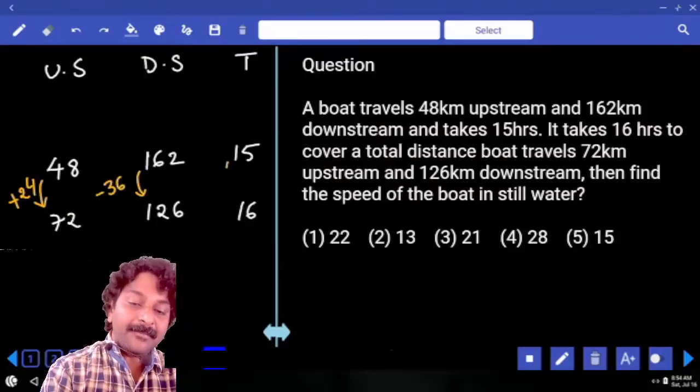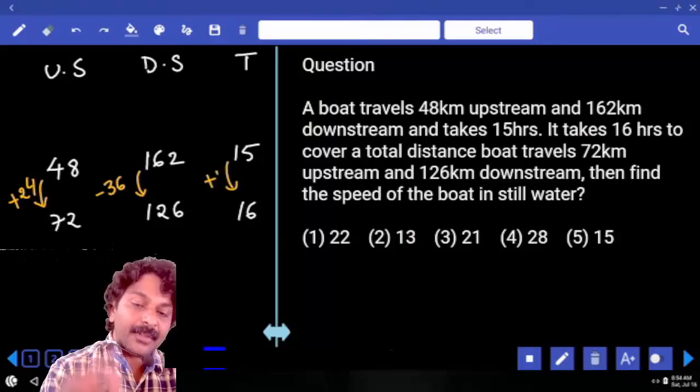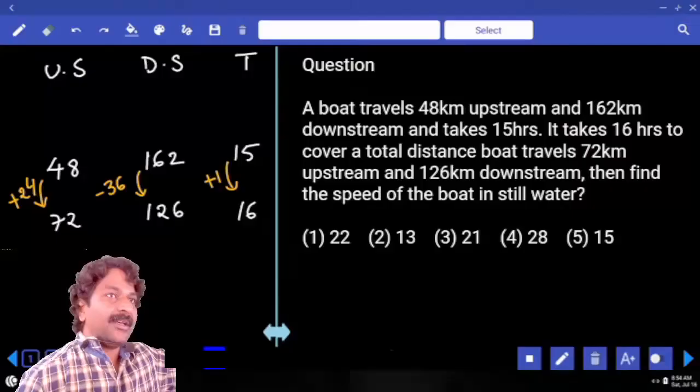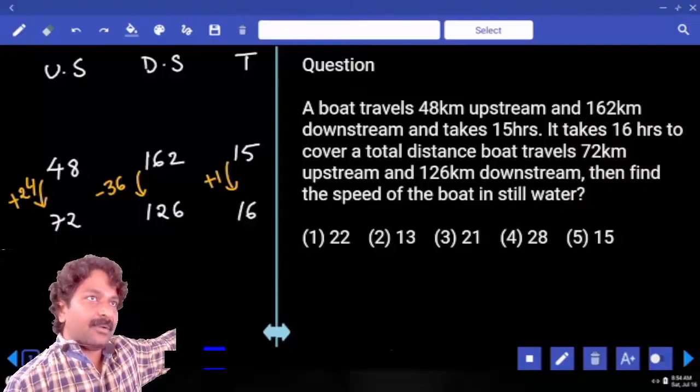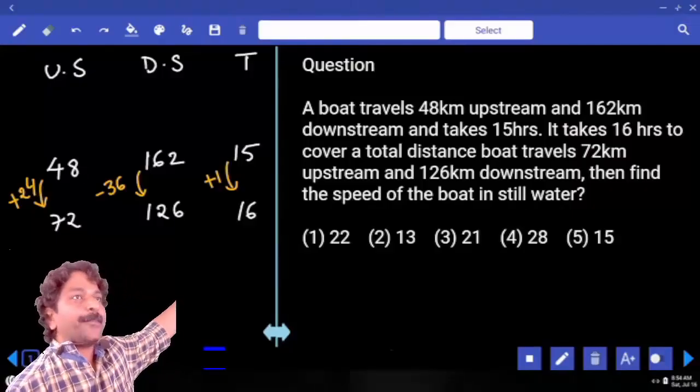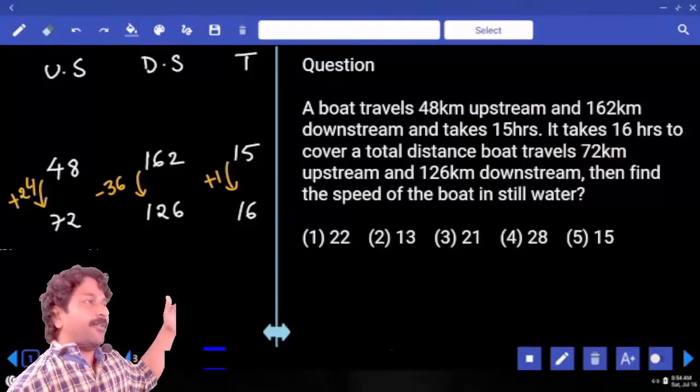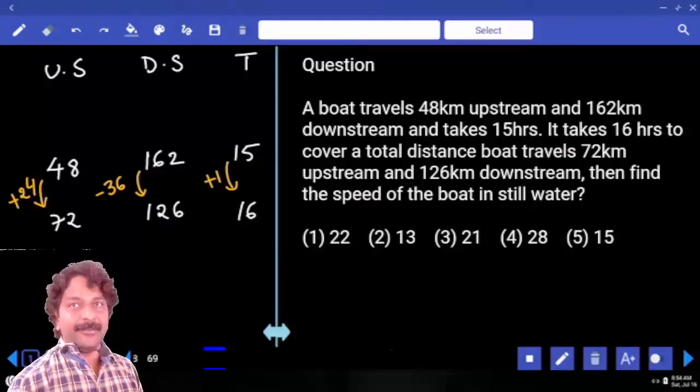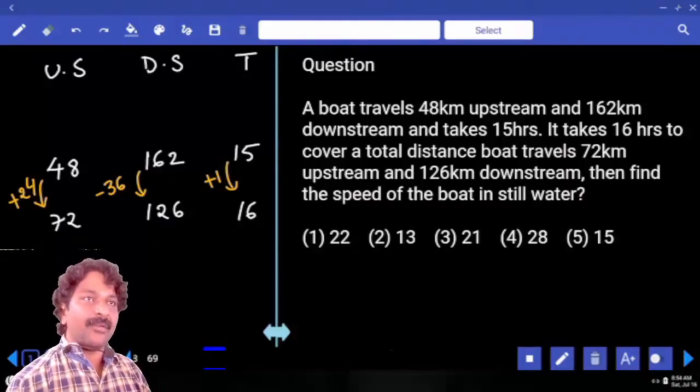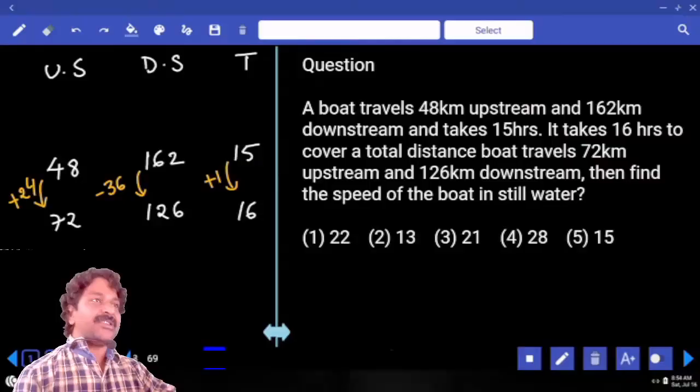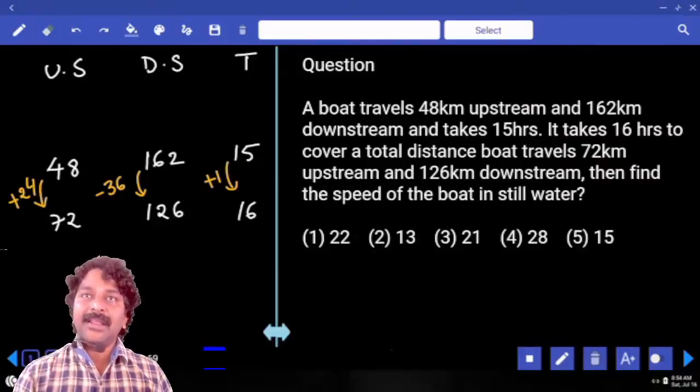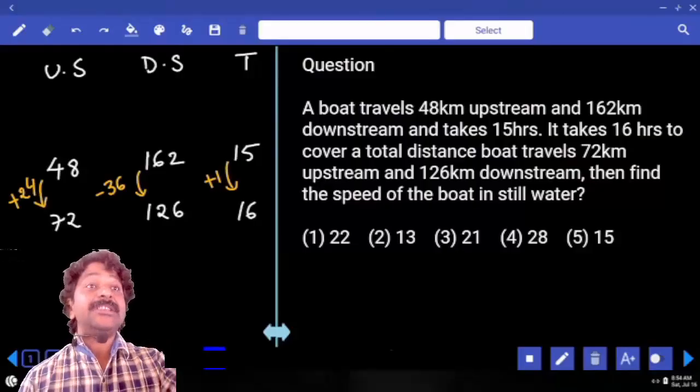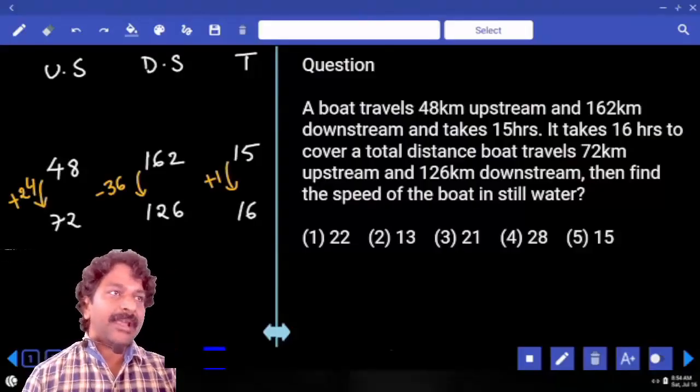Now what happened to time? Increased by 1 hour. Using this relation, what I mean to relation is, upstream increased by 24 kilometers, downstream decreased by 36 kilometers, and time increased by 1 hour. Now, using this relation, I want to make distance covered in either upstream or downstream 0. We have to make it 0.